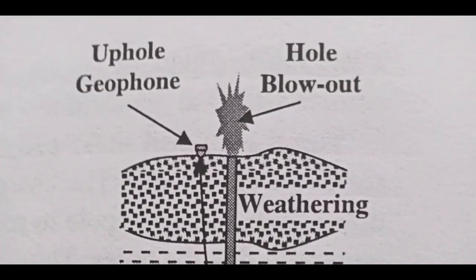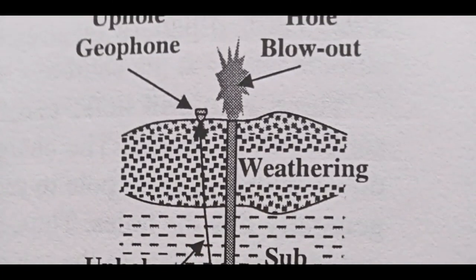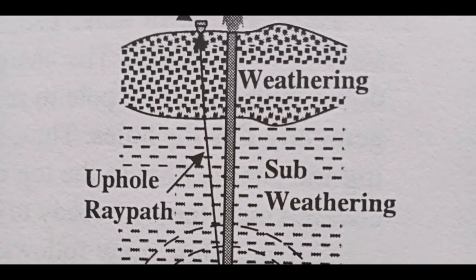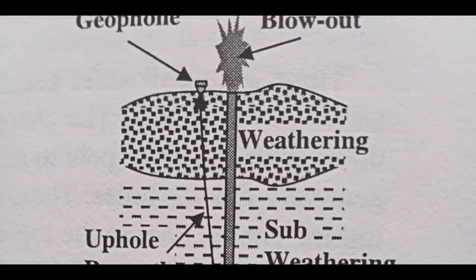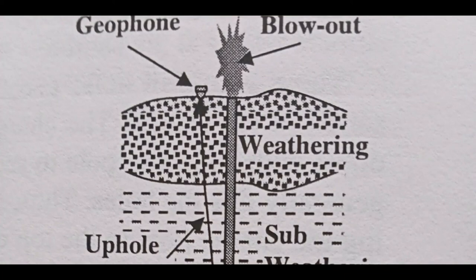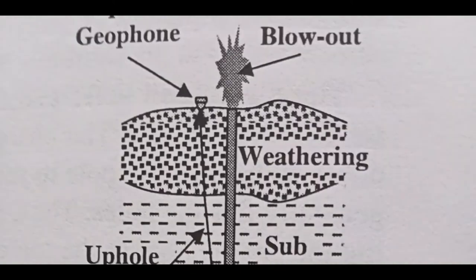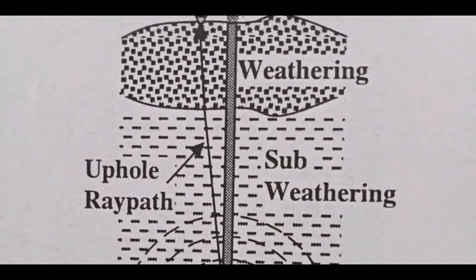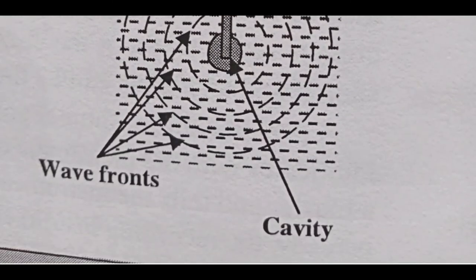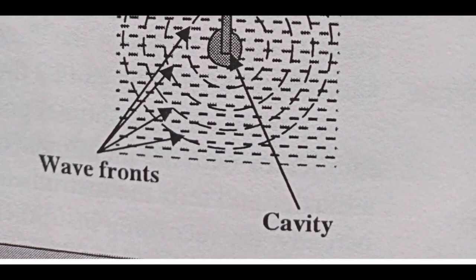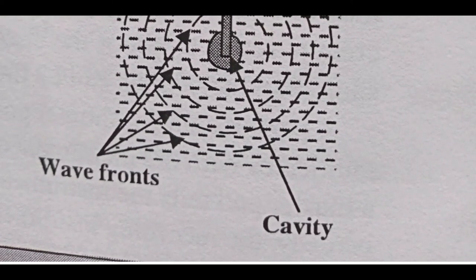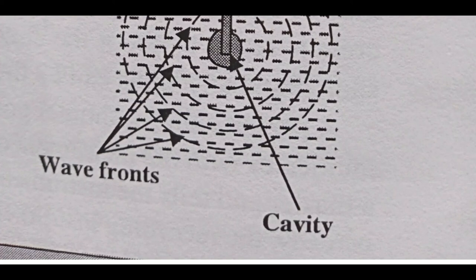From the figure, you can see the uphole geophone which records the uphole wave, giving us information about the weathering zone — its velocity and thickness. You can also see the blowout in the figure, where most energy is lost. In the next video, I will discuss Vibroseis and cover important relevant points.